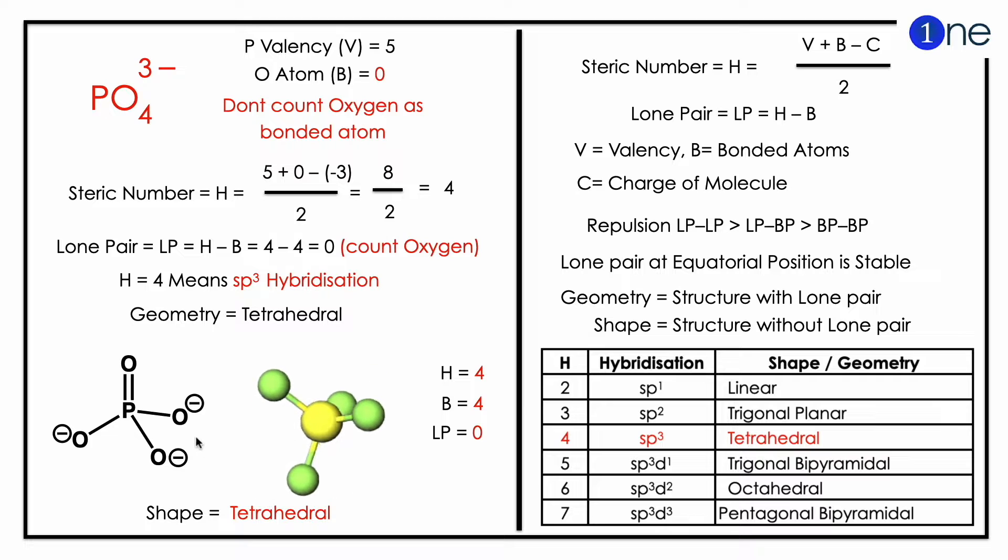This gives 8 by 2, which gives 4. So H is 4. The lone pair will be H minus B. Here you should count oxygen, so 4 minus 4 gives 0. H equals 4 means sp3 hybridization.